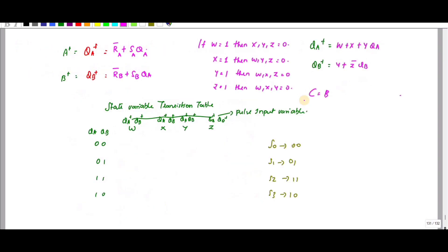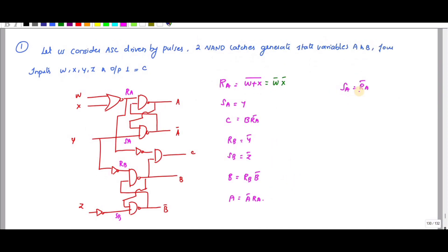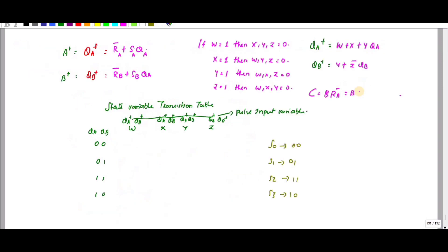C is equal to B into RA bar. RA bar is (W plus X) bar, so C equals B into (W plus X) bar, which simplifies to QB into (W plus X) bar.